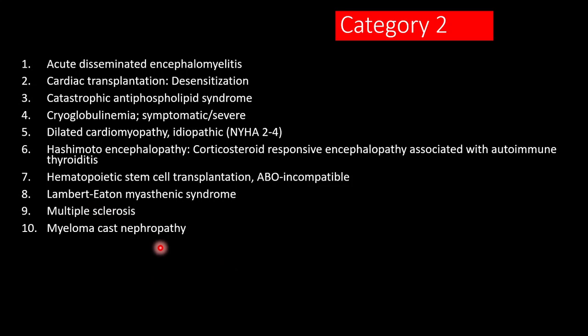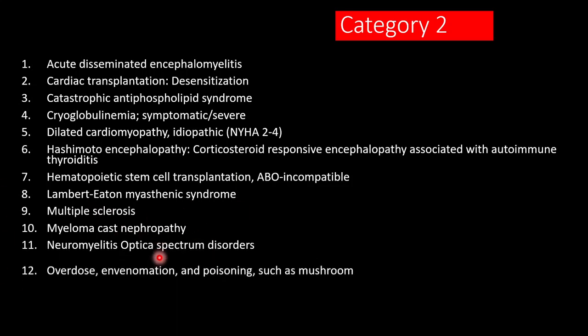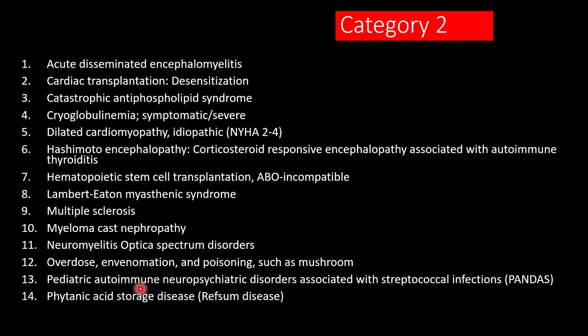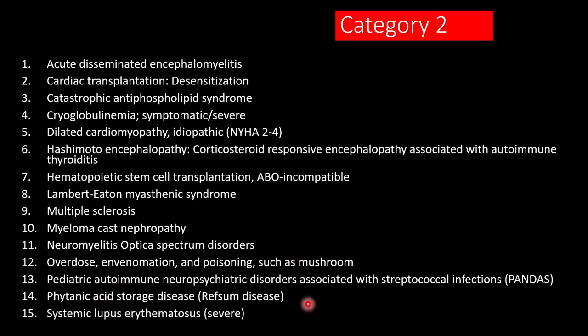Continuing Category 2: hematopoietic stem cell transplantation for desensitization, Lambert-Eaton syndrome in very rare conditions where there is no response, multiple sclerosis, myeloma cast nephropathy as a backup treatment, and severe lupus nephritis — not only lupus nephritis but other manifestations of systemic lupus erythematosus not responding to standard immunosuppressive therapy.